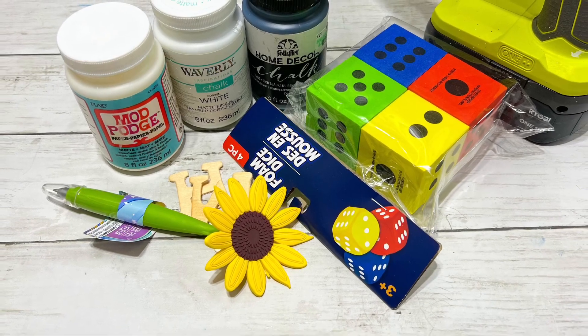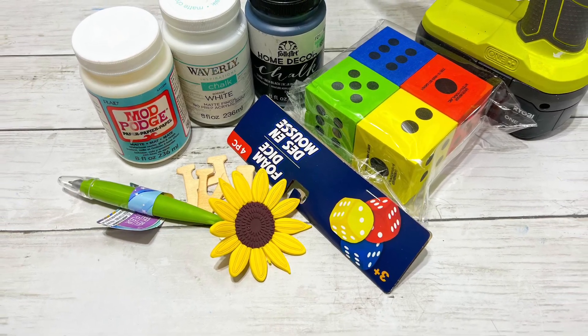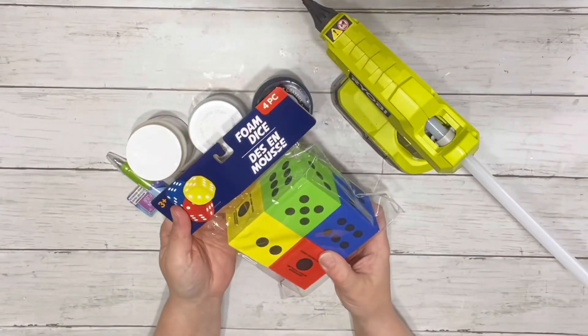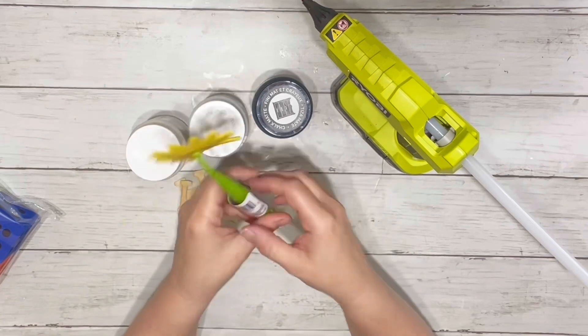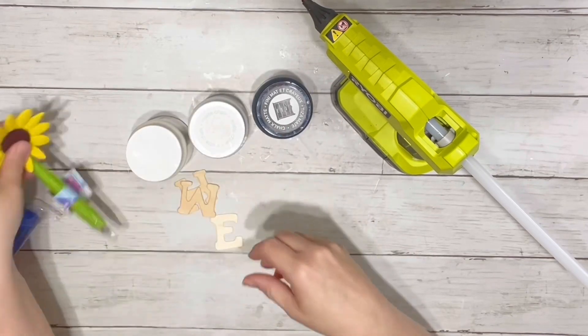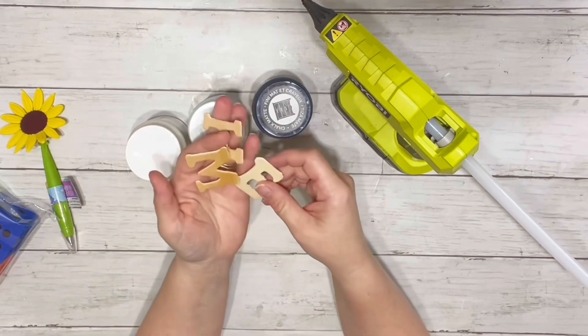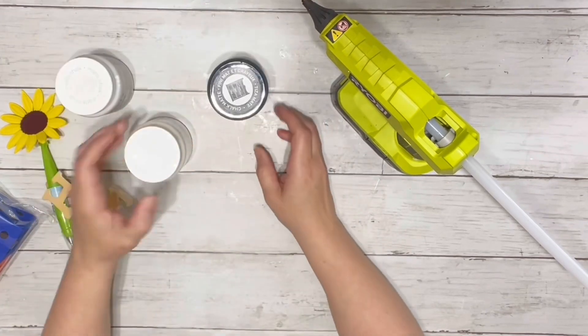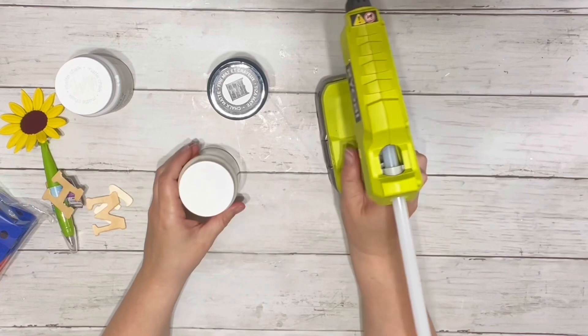Hi everyone, it's Beth, and today I'm making a super cute spring farmhouse display. I use this set of four foam dice from Dollar Tree, this little pen with a sunflower on it from Dollar Tree, some of their little wooden letters, black and white chalk paint, Mod Podge, and hot glue.